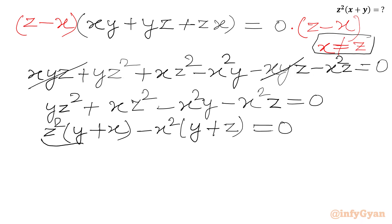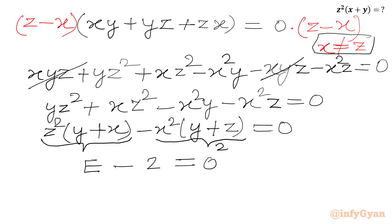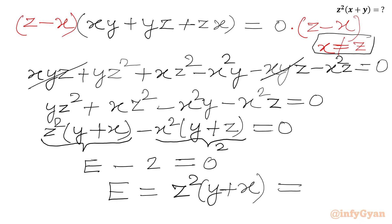Now this is the expression we are actually evaluating, and this is our equation number 1. So we can write expression e minus 2 times e equals 0, or equivalently z squared times x plus y equals 2. Our answer is 2.